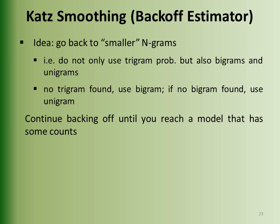The next method is Katz smoothing, or the back-off estimator, which computes adjusted counts. It works on the theory of 'steal from the rich (seen events) and give to the poor' — back off to smaller N-grams. It says do not use only trigram probability but also bigram and unigram. If no trigram is found, use bigram; if no bigram found, use unigram. Continue backing off until you reach a model that has some counts.